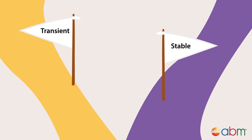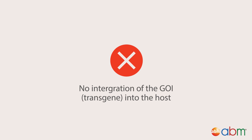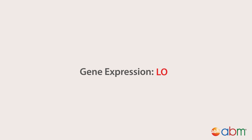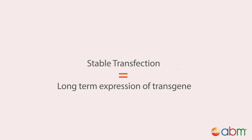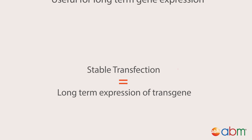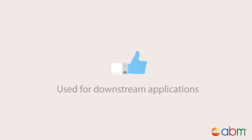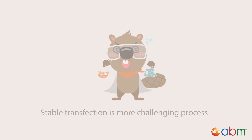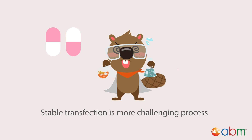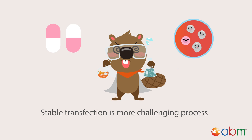Considerations — type of transfection. Transfection strategies can result in either transient or stable outcomes. Transient transfection results in no integration of the gene of interest or transgene into the host; thus, the gene expression or modification will be lost over time. This is useful for rapid results with short-term expression of genes or gene products. Stable transfection refers to the long-term expression of transgenes integrated into the host genome, useful for long-term gene expression. However, DNA integration into the host chromosome is a rare event, making stable transfection a more challenging process, as it involves direct selection and clonal isolation to ensure you have a population of stable cells to work with.